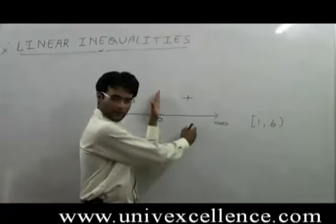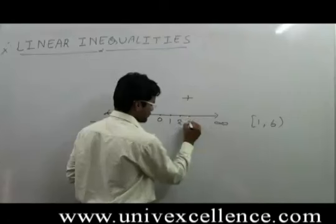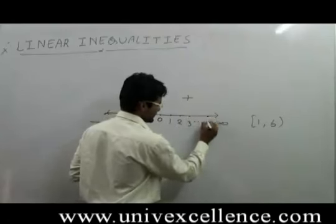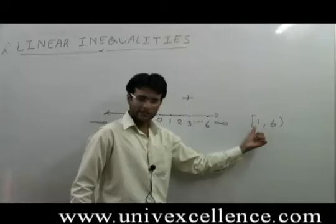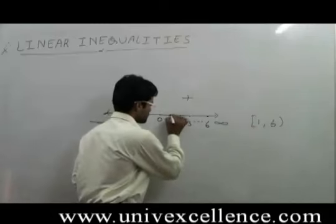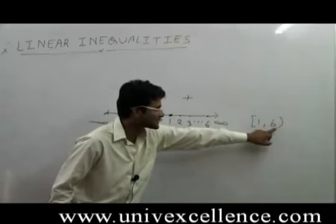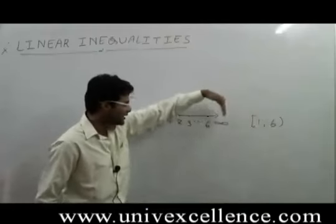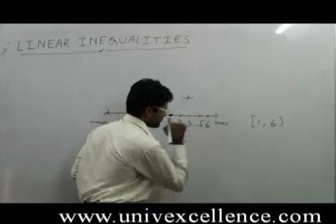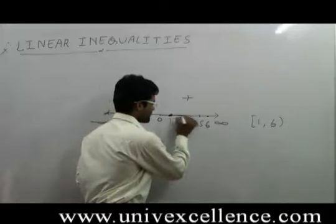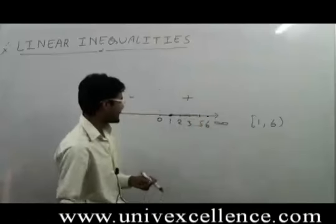Now draw 1, 2, 3... and 6 is here. The solution is [1,6) where one is included in the solution. The solution goes to six but six is not included - the solution will be till five. So we can darken this line.